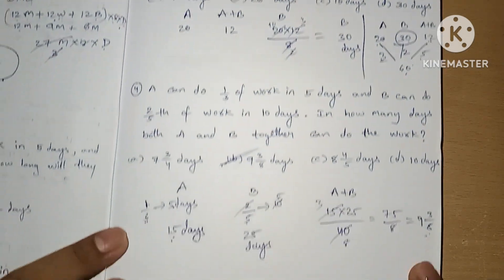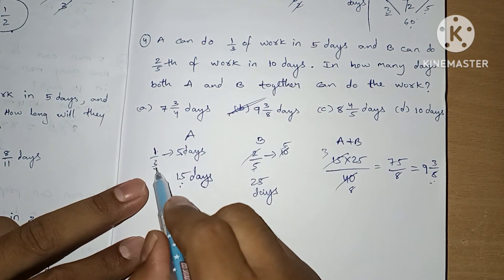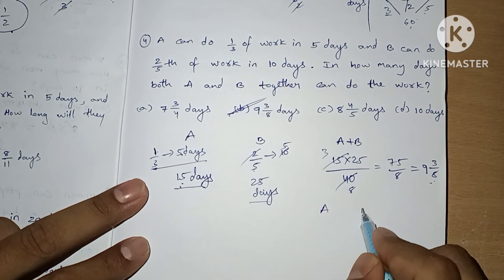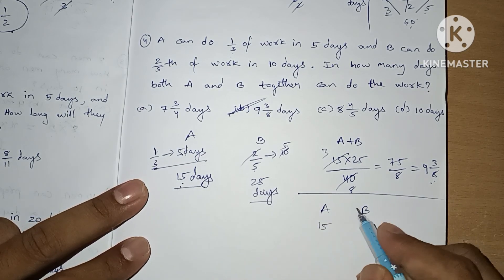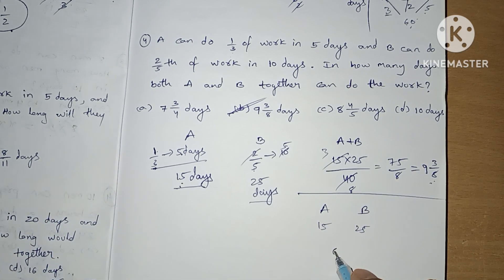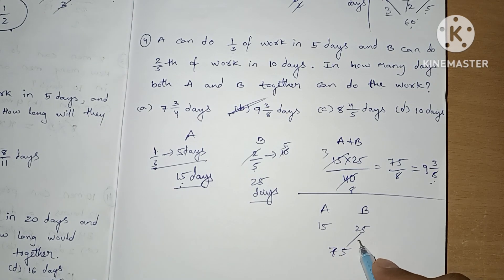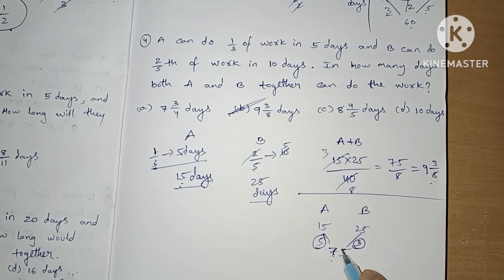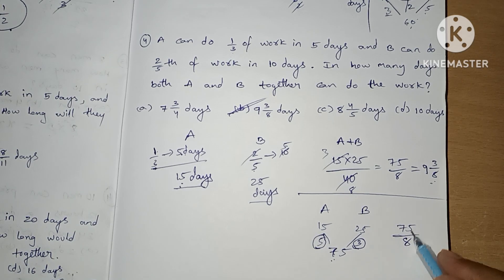Let's learn this using LCM. For A = 15 days and B = 25 days, the LCM is 75. Efficiencies: 25 × 3 = 75 so A's efficiency is 5; 15 × 5 = 75 so B's efficiency is 3. Working together, 5 + 3 = 8 total efficiency. We need to complete 75 units, so 75/8 is our answer — 9 and 3/8 days.